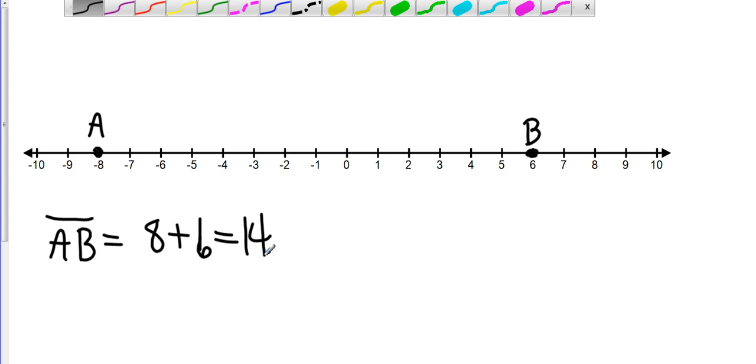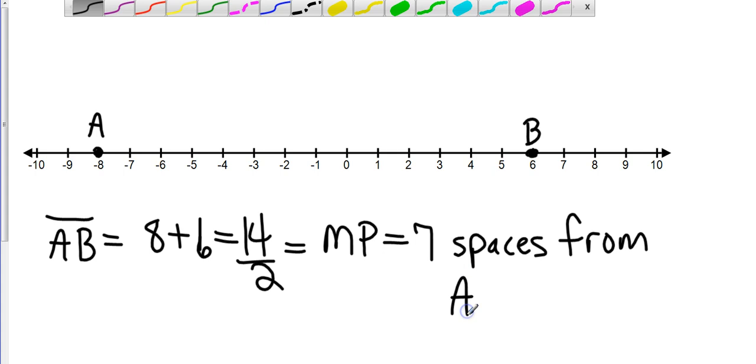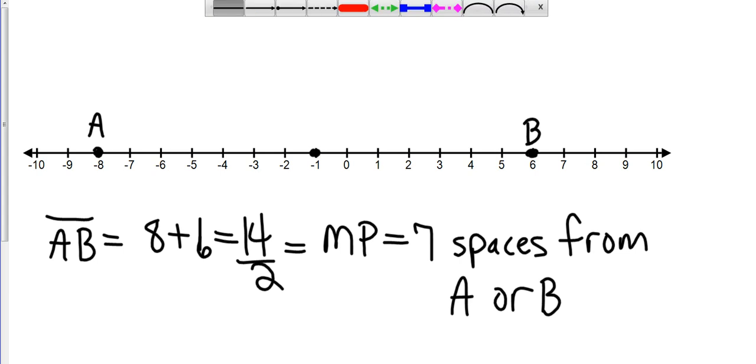If I want to find the midpoint, if I want to find the middle of anything, I cut it in half. And so I'm going to divide that 14 by 2, which means my midpoint is 7 spaces away, excuse me, 7 spaces from A or B. Again, it should be the same. So if I go 7 spaces away from A, that's going to be right there. 7 spaces away from B should also be the same. And so that is my midpoint at negative 1.